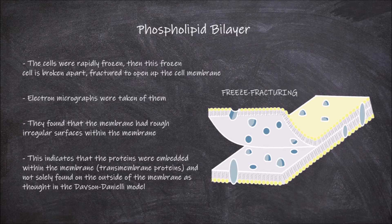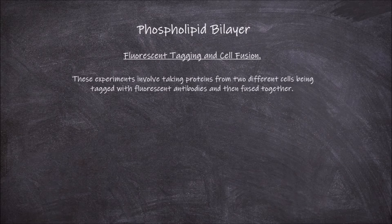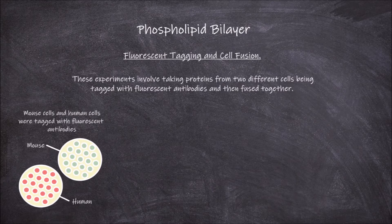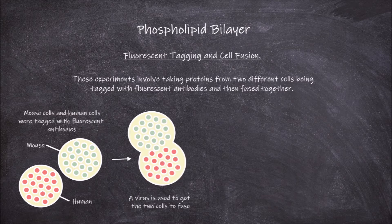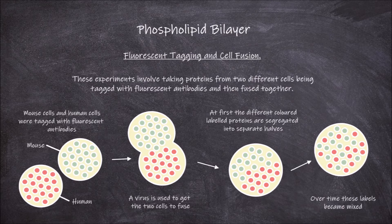Another technique that helped falsify the Davson-Danielli model was fluorescent tagging and cell fusion. These experiments involved taking proteins from two different cells, tagging them with fluorescent antibodies, and then fusing them together. Frye and Edidin conducted such experiments in 1970, tagging mouse and human cells with different coloured fluorescent dyes, then using a virus to fuse the two cells. At first the different colour labelled proteins were segregated into separate halves of the fused cell, but over time these labels became mixed, giving evidence that the cell membrane is fluid and that proteins move around within it.